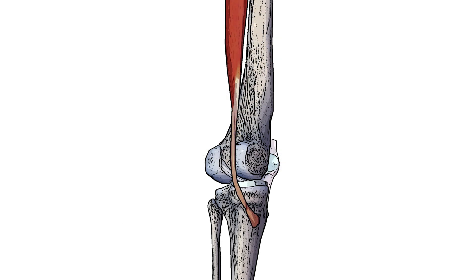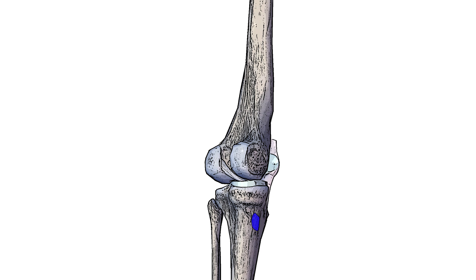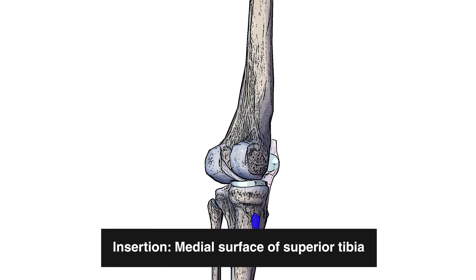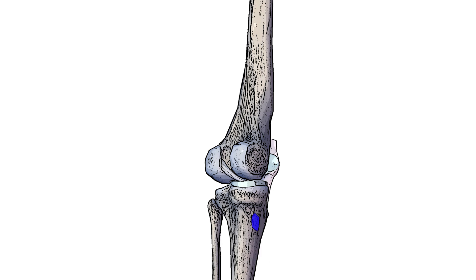Next, let's take a look at the insertion. The semitendinosus muscle comes down across the femur and inserts on the tibia. The insertion is now marked out in blue. It's towards the top — the superior or proximal part — of the tibia, and towards the inner side, so the medial side. So we would describe the insertion as being on the medial surface of the superior or proximal tibia.